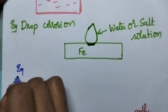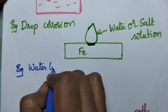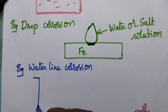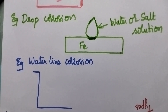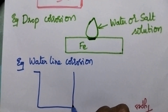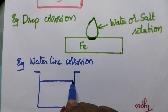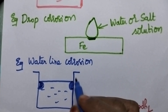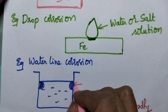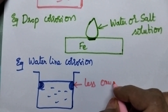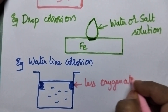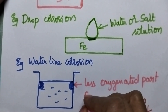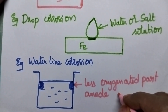Similarly, we can also consider one more example and that is called waterline corrosion. This waterline corrosion is also due to the difference in air concentration. Mostly, the line which is just beneath the water level undergoes corrosion, and it is especially due to the less oxygenated part. The line just below the water meniscus is the less oxygenated part — it becomes anode and undergoes corrosion.